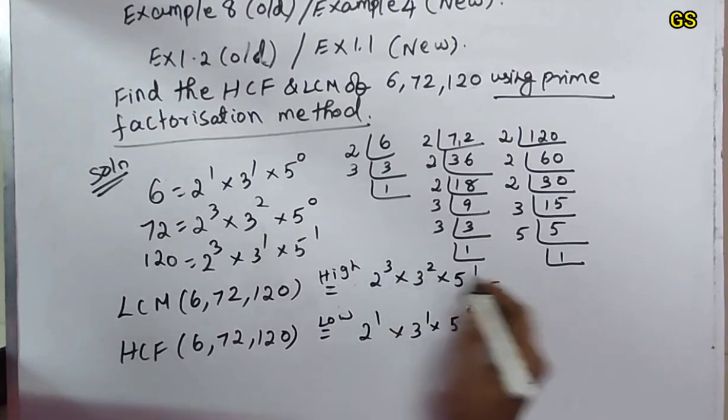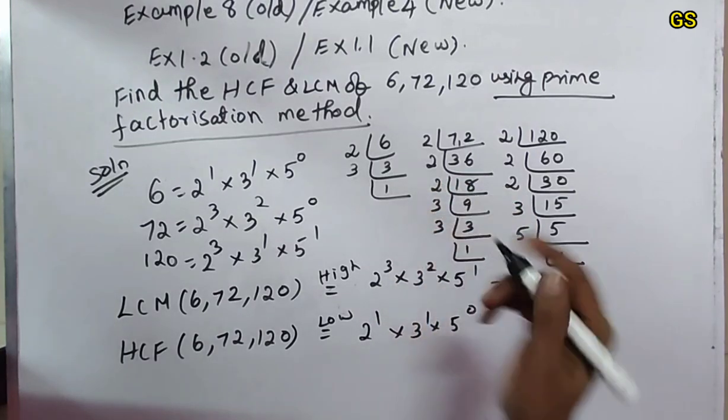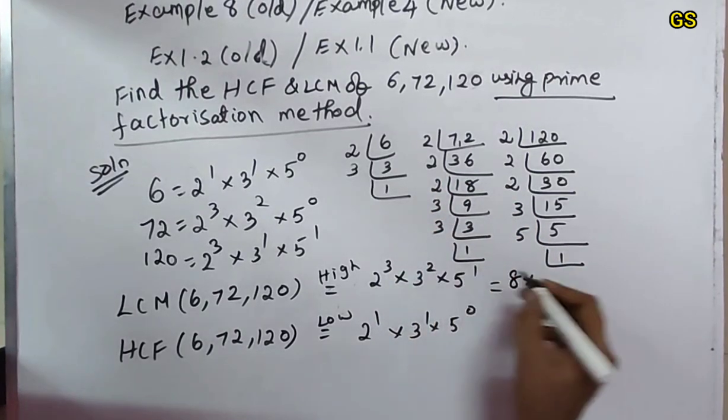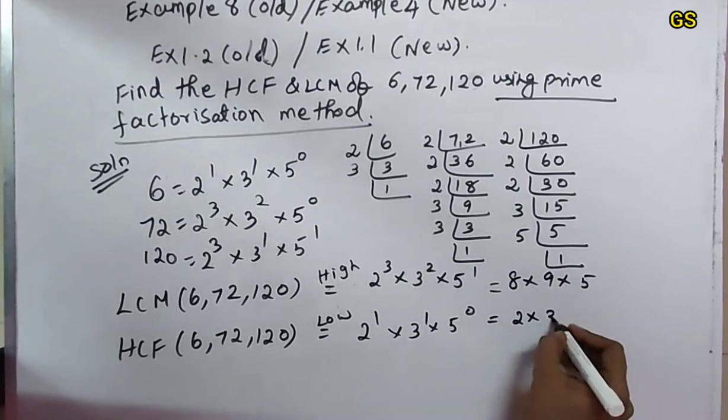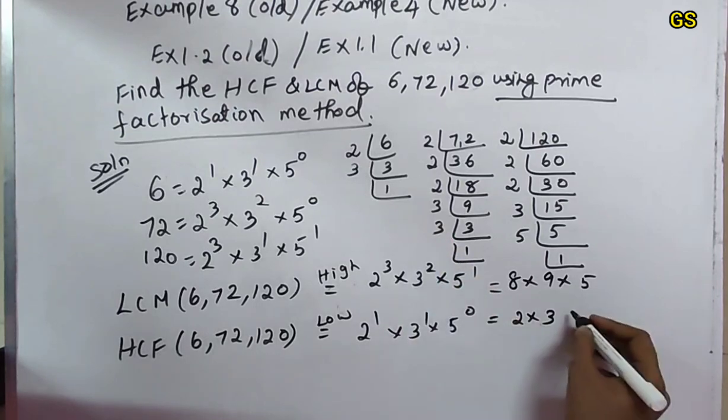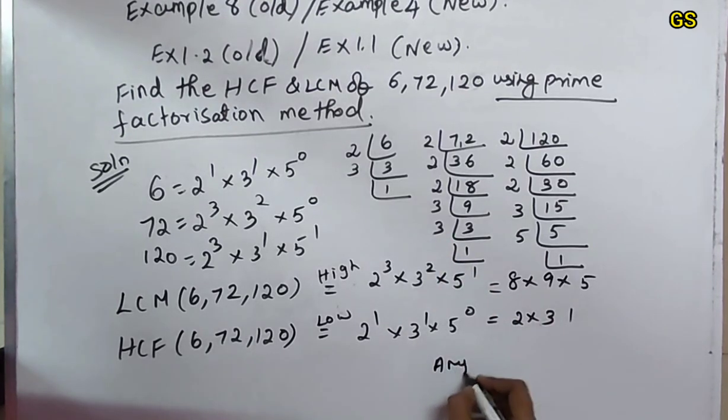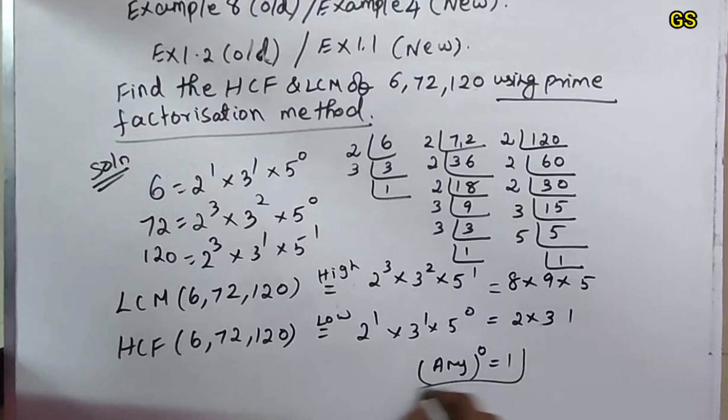2 cube: 2 times 2 is 4, 4 times 2 is 8. 3 squared is 9. 5 to the power 1 is 5. For HCF: 2 to the power 1 is 2. Anything to the power 0 is 1.